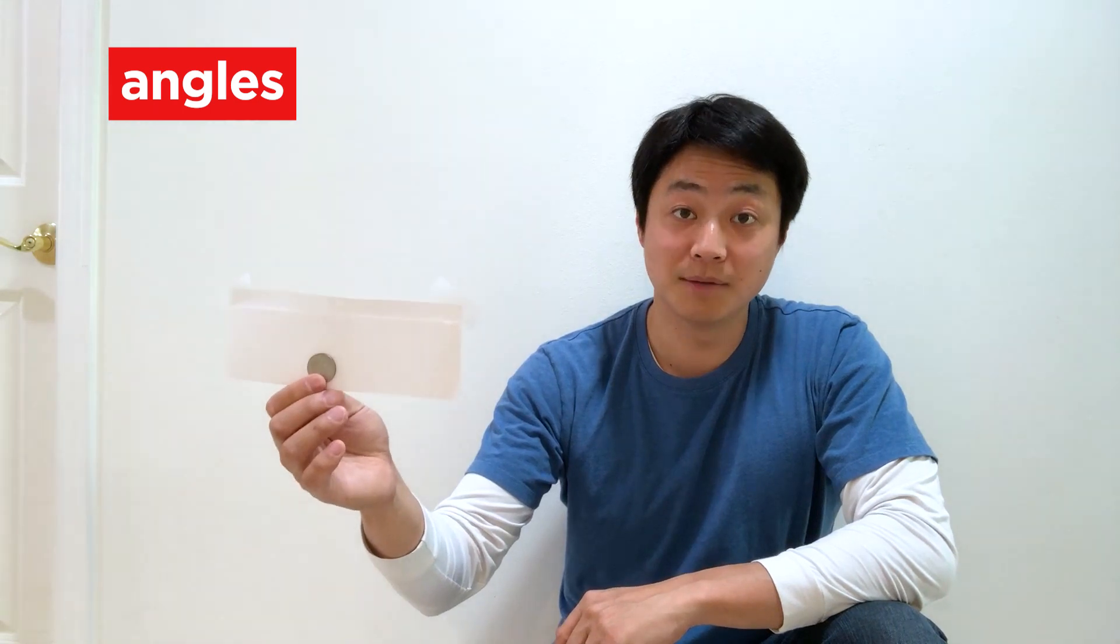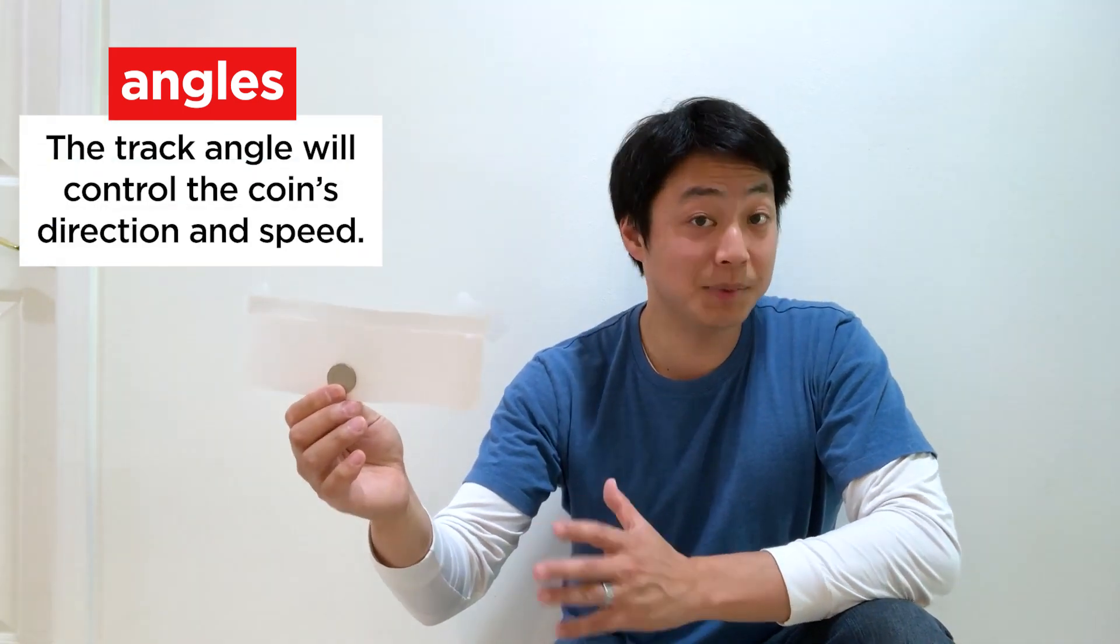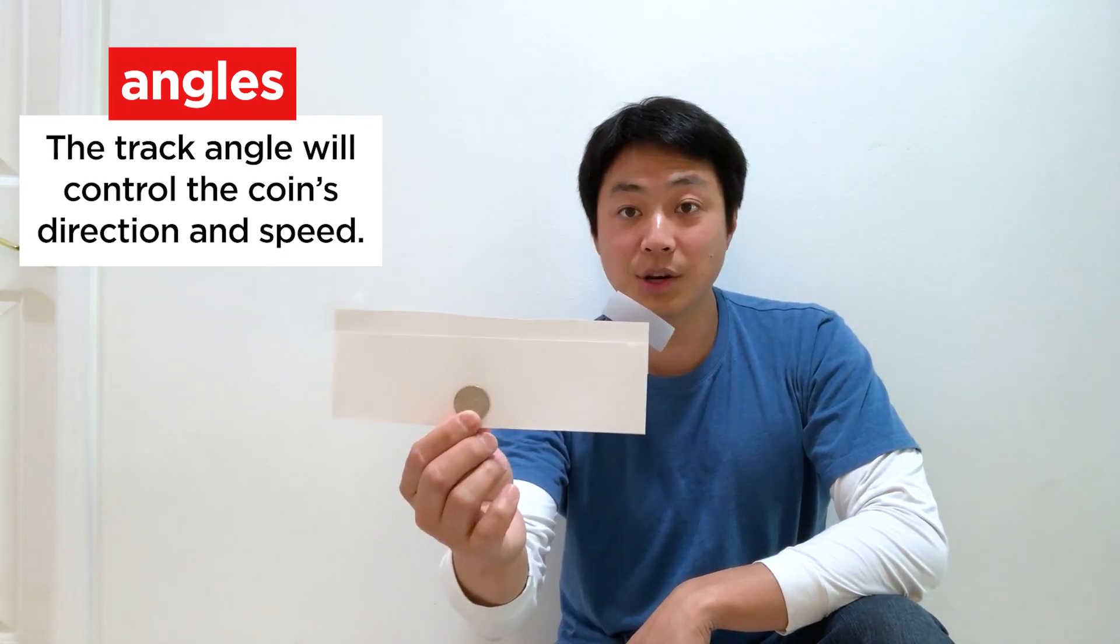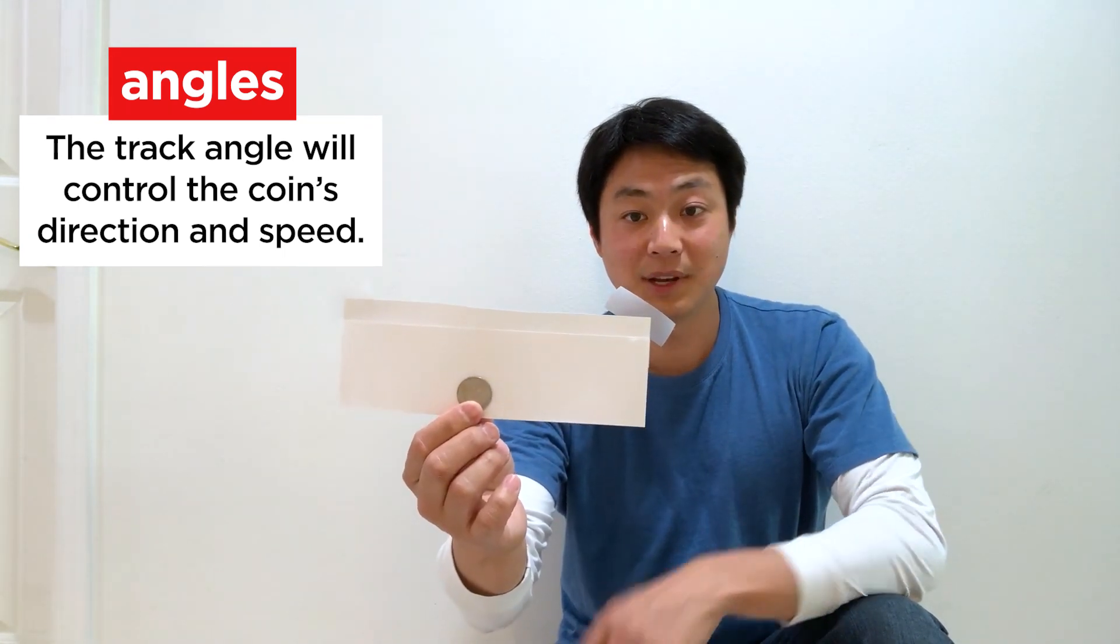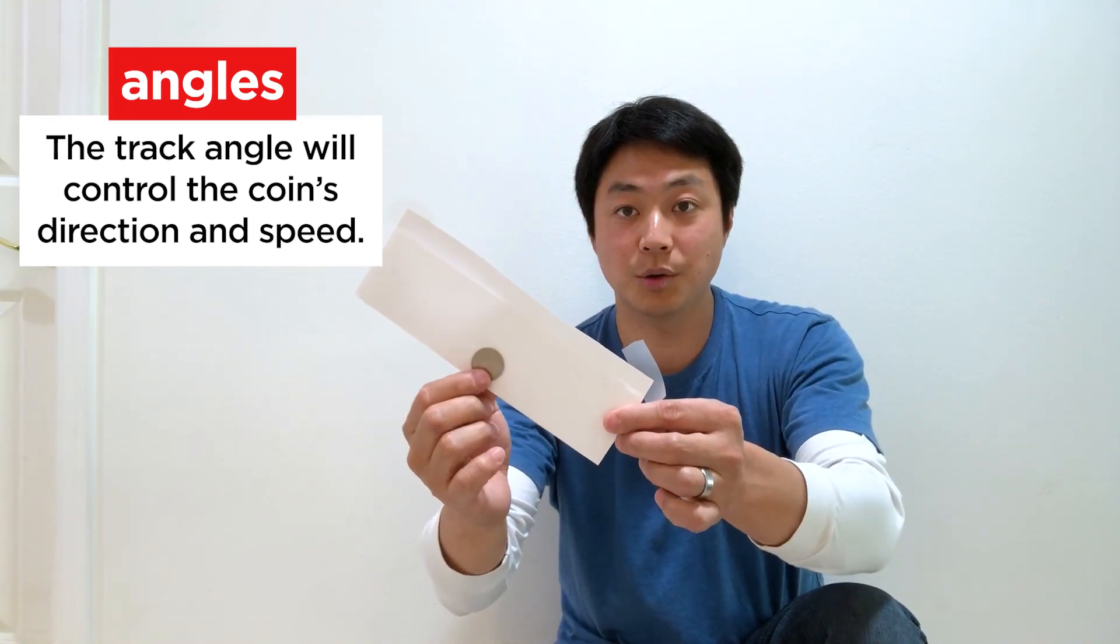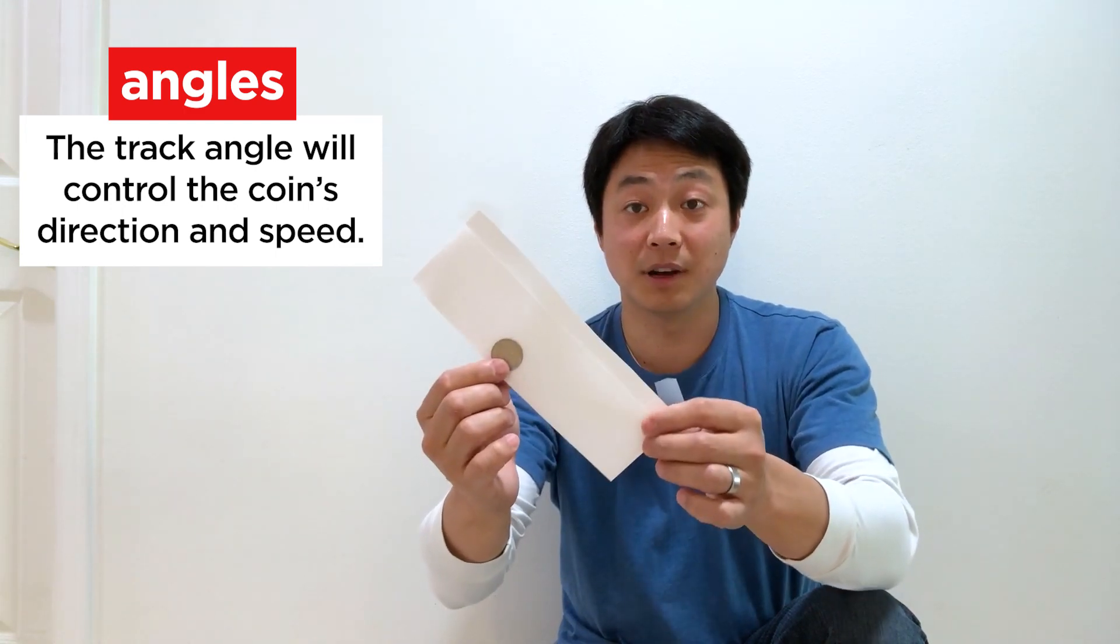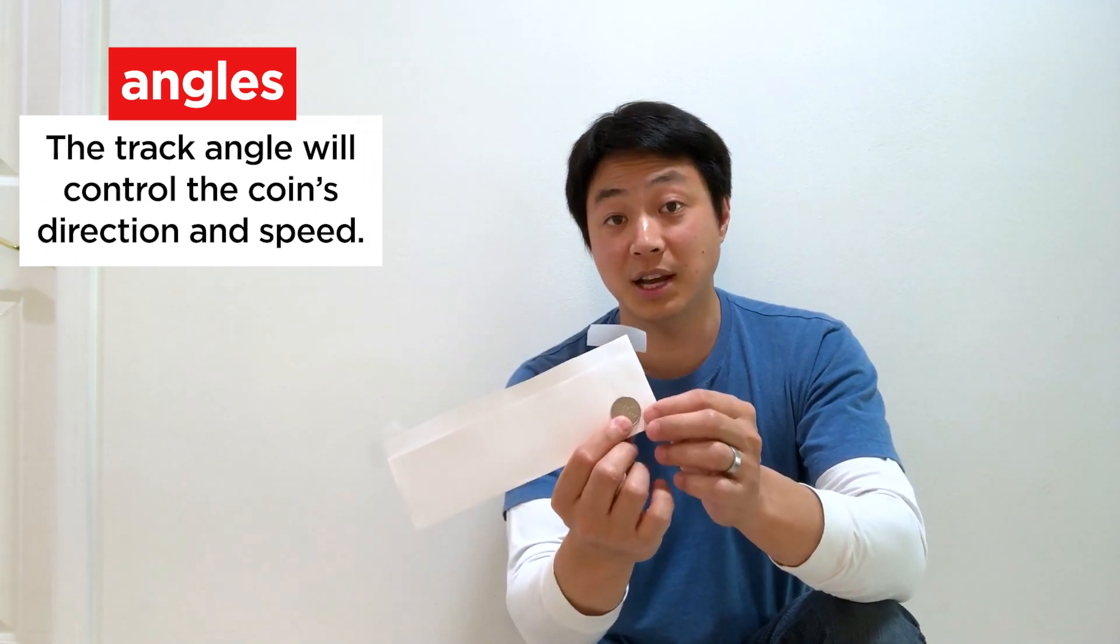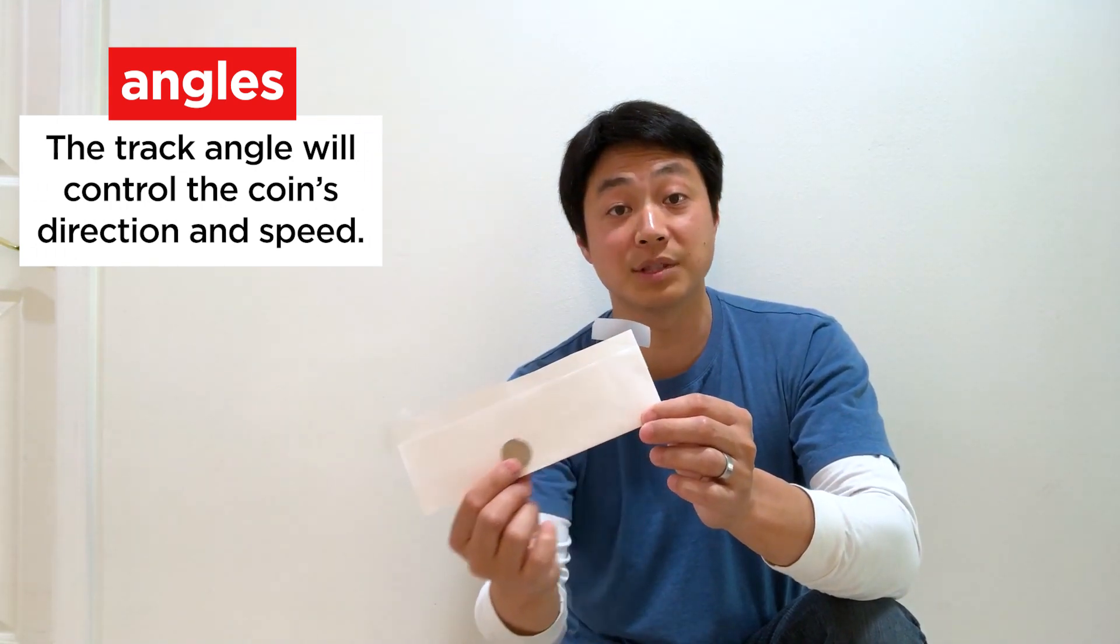Before we begin setting up our roller coaster, let's talk a little bit about angles. The angle of your track is very important. It controls the direction and speed the coin is going to roll through that track. In a flat track like this, the coin is just going to sit there. It's not going anywhere. If you give it a little bit of angle, the coin will roll slowly in that direction. If you give it a lot of angle, the coin will roll much quicker. If you want to change directions, change the angle. Coins are always going to want to roll downhill.